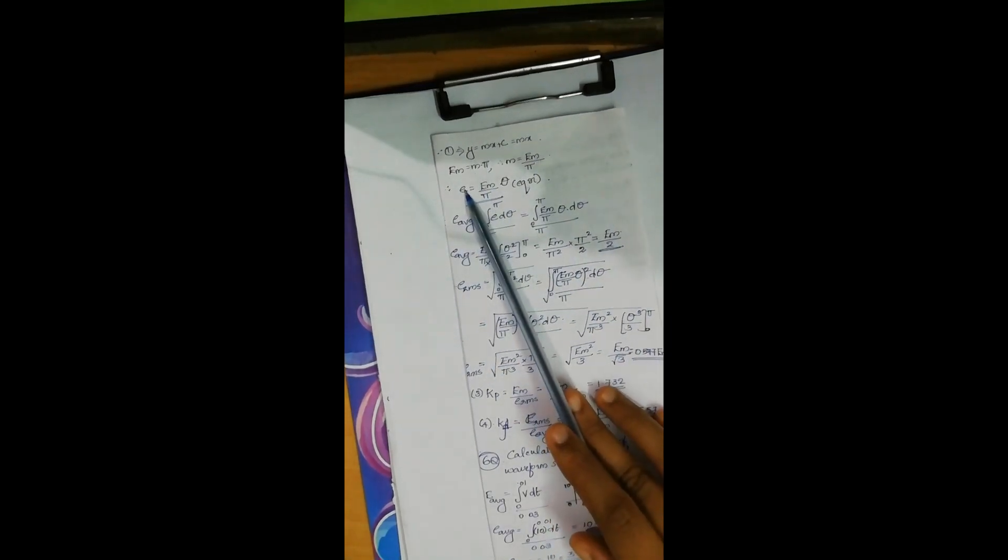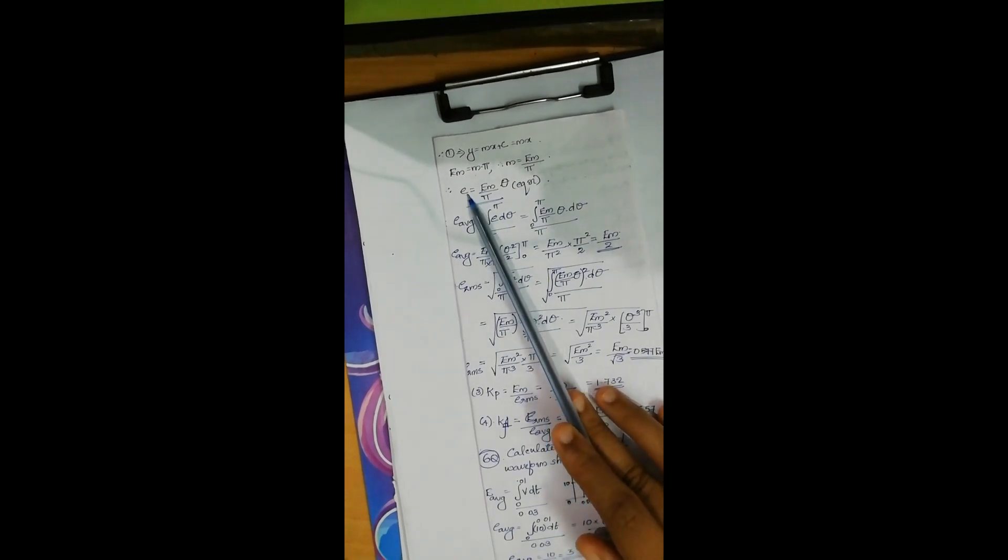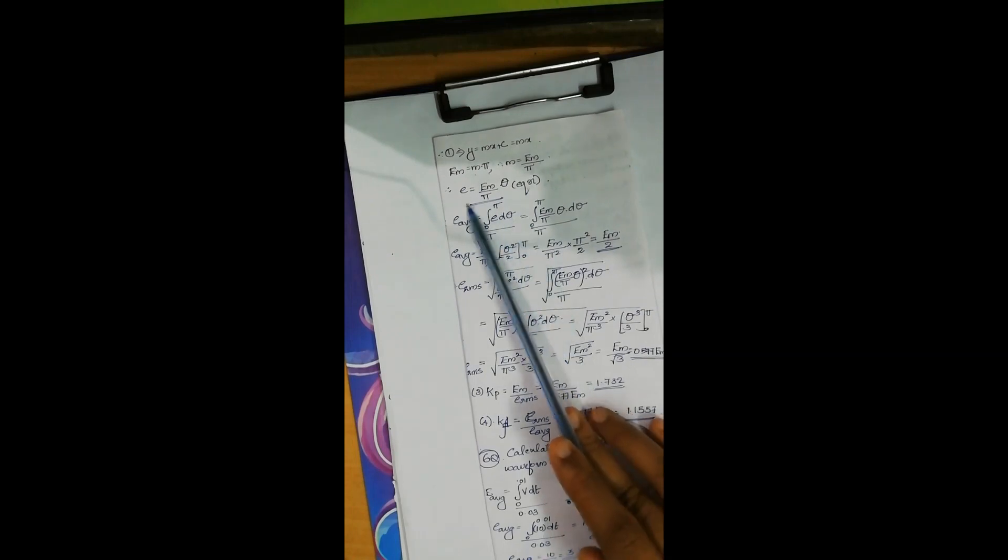The equation, instead of y we have written e and instead of x we have written theta. So this is our equation. Now we can go for the calculation of average and RMS value.